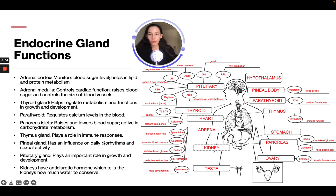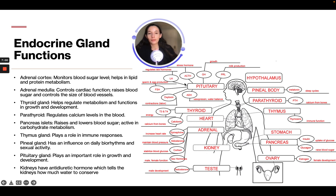The pineal gland influences daily biorhythms and sexual activity — the pineal releases melatonin, which has to do with our sleep cycle. The pituitary gland plays a role in growth and development and releases a lot of hormones: PRL for milk production, growth hormone for growth, ACTH for stress hormones, LH for regulating sex hormones, and FSH for sperm and egg production — which we discussed when we talked about the ovarian cycle.